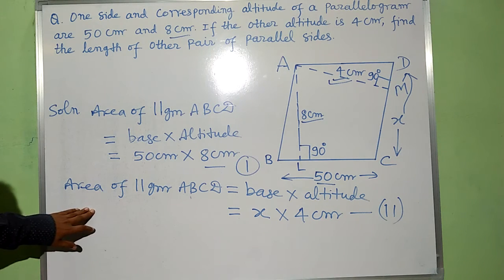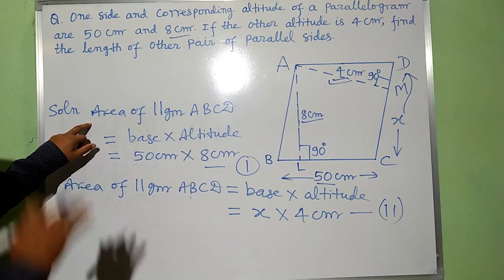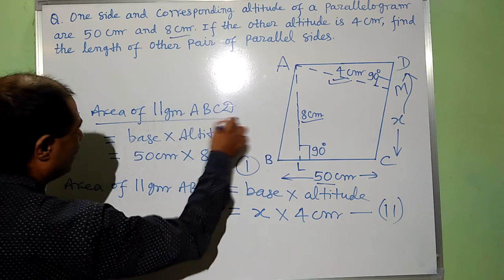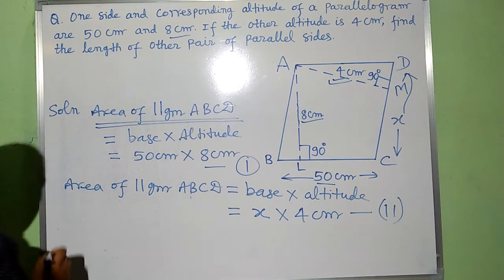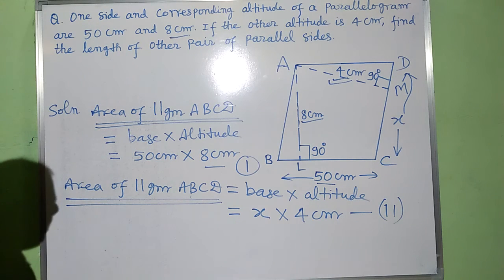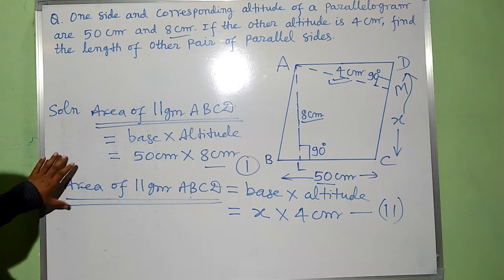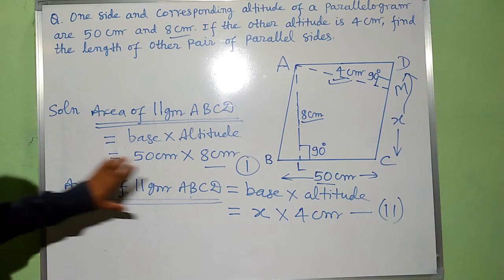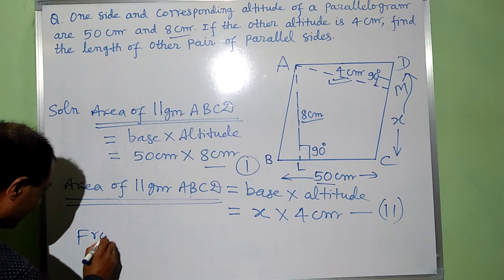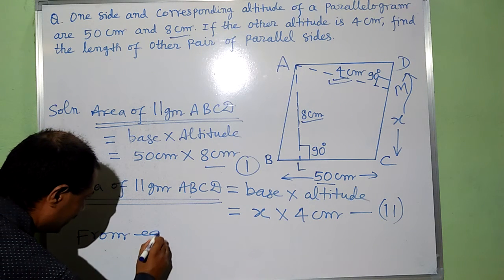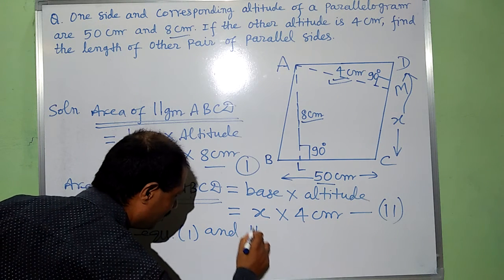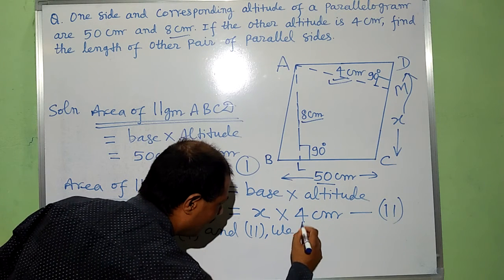But both are areas of same parallelogram. Area of parallelogram ABCD and area of parallelogram ABCD, it means LHS of both equations are same, so RHS will also be same. From equation 1 and 2, we have